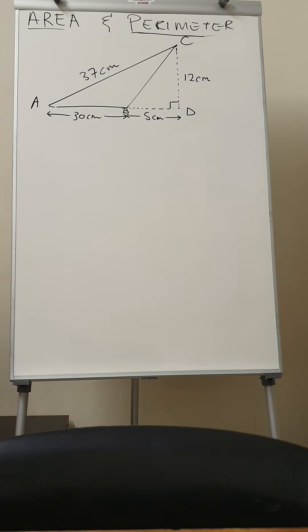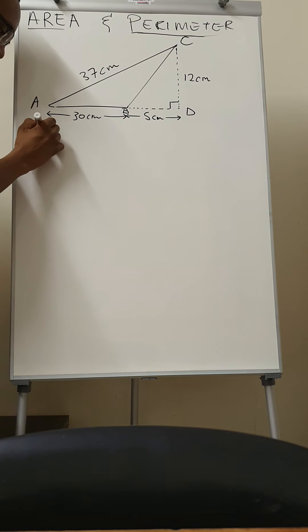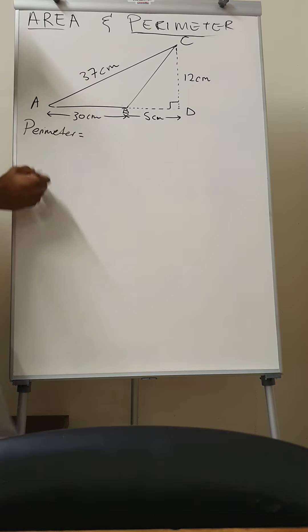Right, so here you're given the triangle, and in triangle we're still looking for the area and perimeter. So we're going to start with perimeter.